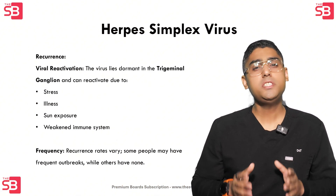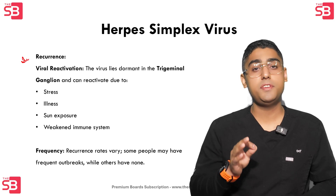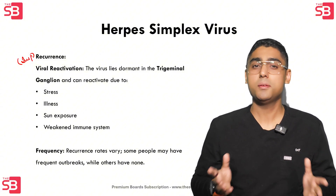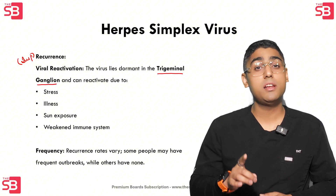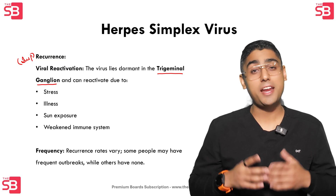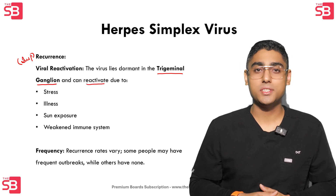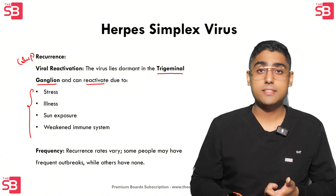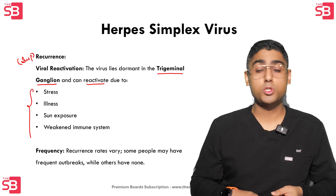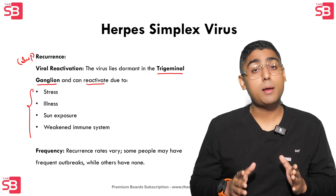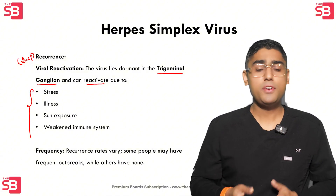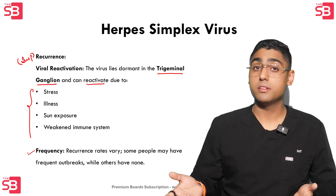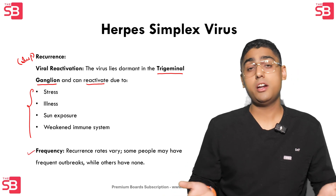Now let's talk about the recurrence part, which is a defining feature of HSV infections. After the initial infection, the virus doesn't just disappear — it lies dormant in the trigeminal ganglion, waiting for the right conditions to reactivate. This is an exam question. Viral reactivation can be triggered by multiple factors like stress, illnesses, sun exposure, or even a weakened immune system. When it comes to frequency, it's different for everyone — some individuals may face frequent outbreaks throughout the year, while others may have very few or even none at all.